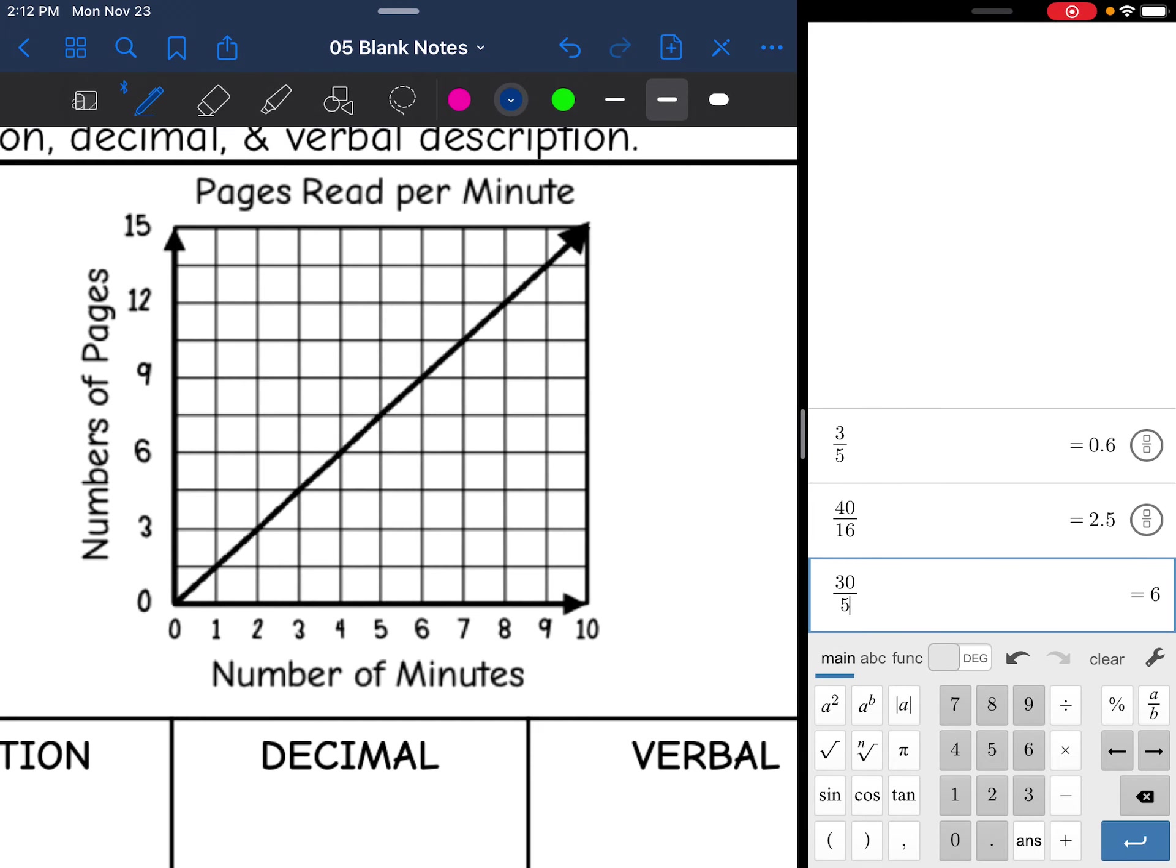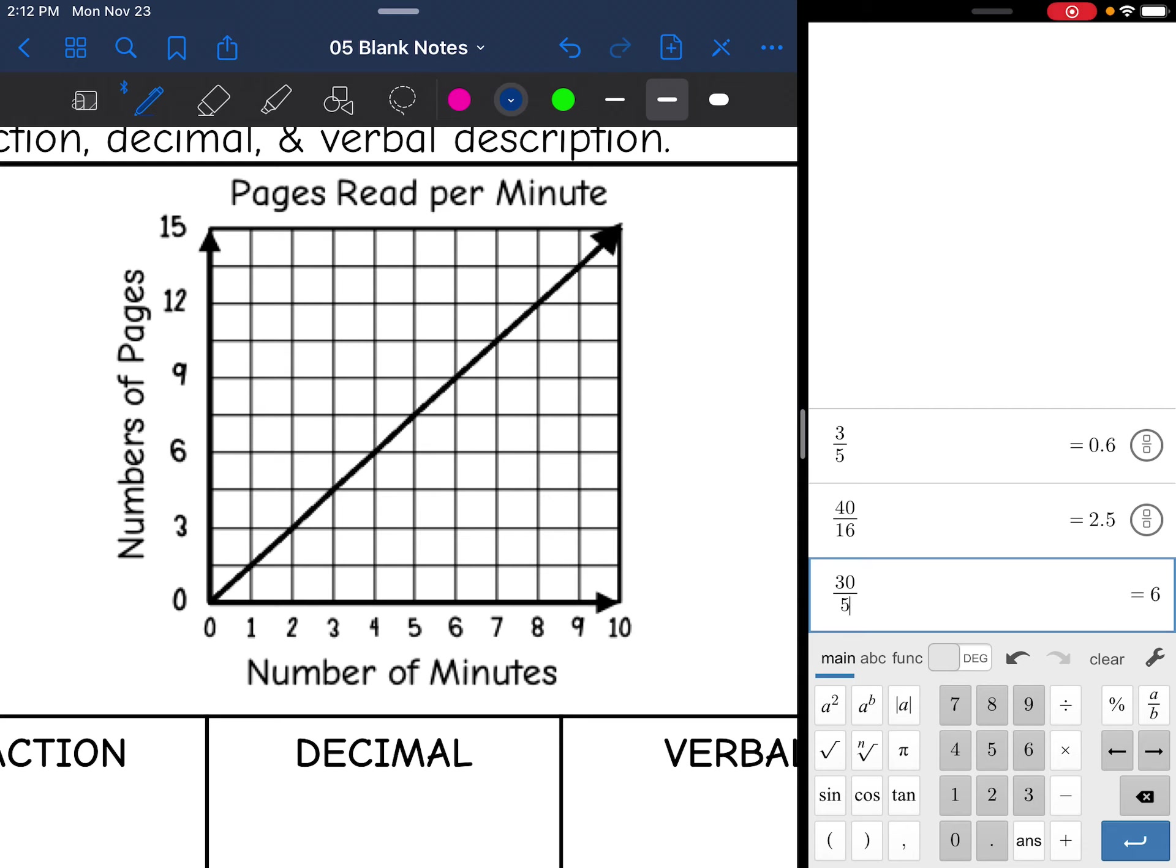Let's look at the next one. So this one is talking about the pages read per minute. The x-axis is the number of minutes, and the y-axis is the number of pages. Careful with your scale here. They only marked every other line as 3. So that means that the lines in between are another 1.5. So you just have to be really careful when you're doing the rise on this.